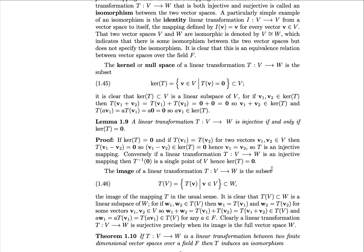We've defined linear transformations, so we should also consider the image of the transformation. The image of a linear transformation T from V to W is the set of T of V where V is taken from V; this is a subset of W, and in particular it's a subspace. To see this, consider any two elements W1 and W2 in the image: we can write W1 equals T of V1 and W2 equals T of V2. Considering W1 plus W2, we apply linearity in reverse to get it as the image of V1 plus V2, so it's closed under addition. Scalar multiplication follows by a similar proof.